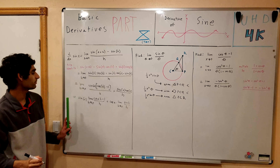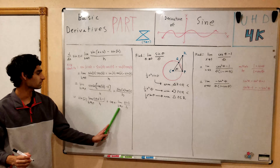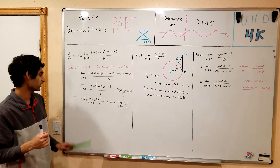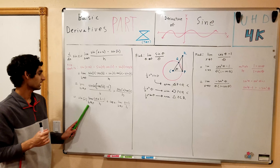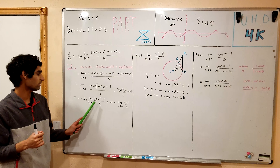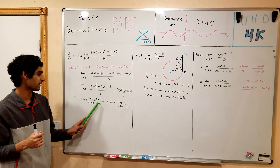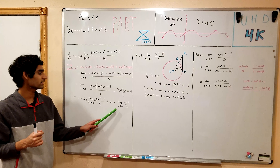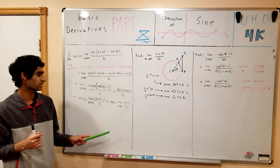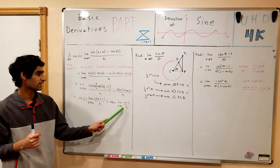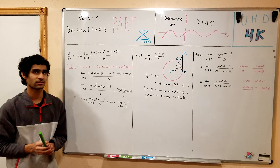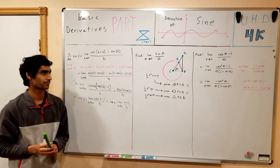We've now come down to two limits we need to find: the limit as h goes to 0 of cosine h minus 1 over h, and the limit as h goes to 0 of sine h over h. And that's exactly what we're going to do right now.